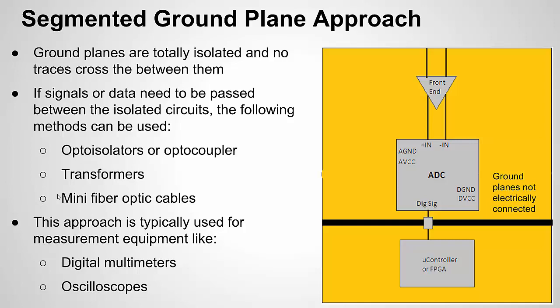Why go to this extreme? It adds significant complexity and cost, especially with fiber optic components. However, this approach is common in test and measurement equipment making very high-resolution measurements. For example, a six-and-a-half digit DMM almost certainly has its measurement circuit ground plane isolated. For very precision measurements, this is the approach to use. You still have digital signals present, but you know where the digital ground currents are flowing — pushing the digital communication to the edge of the ground plane lets you truly isolate the measurement section.